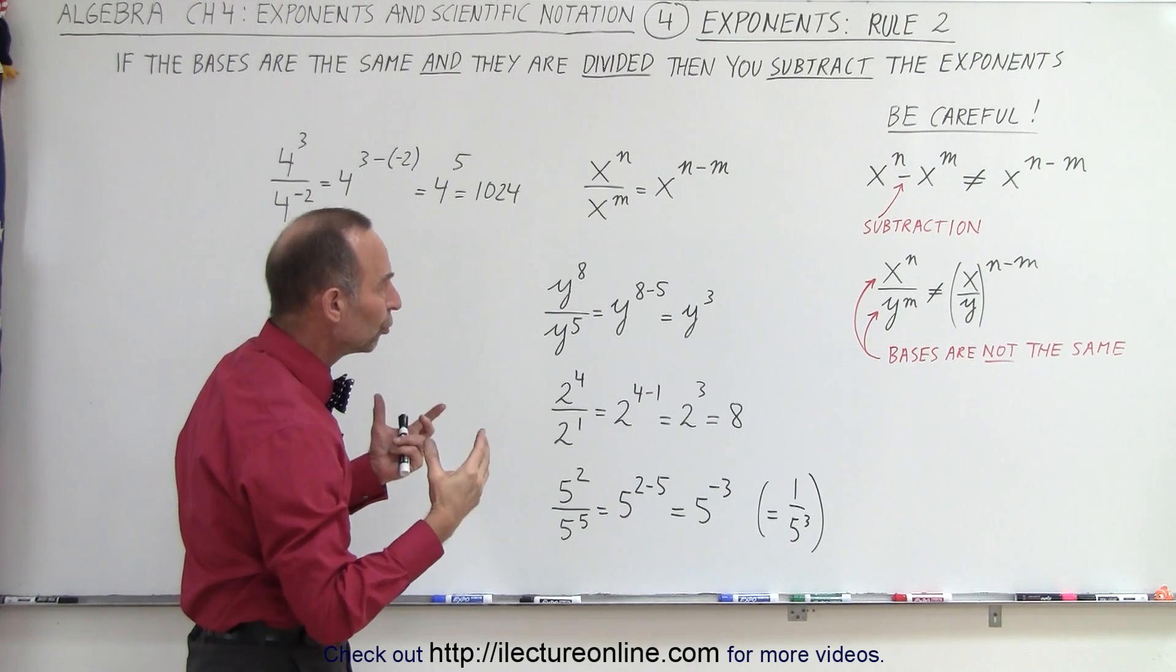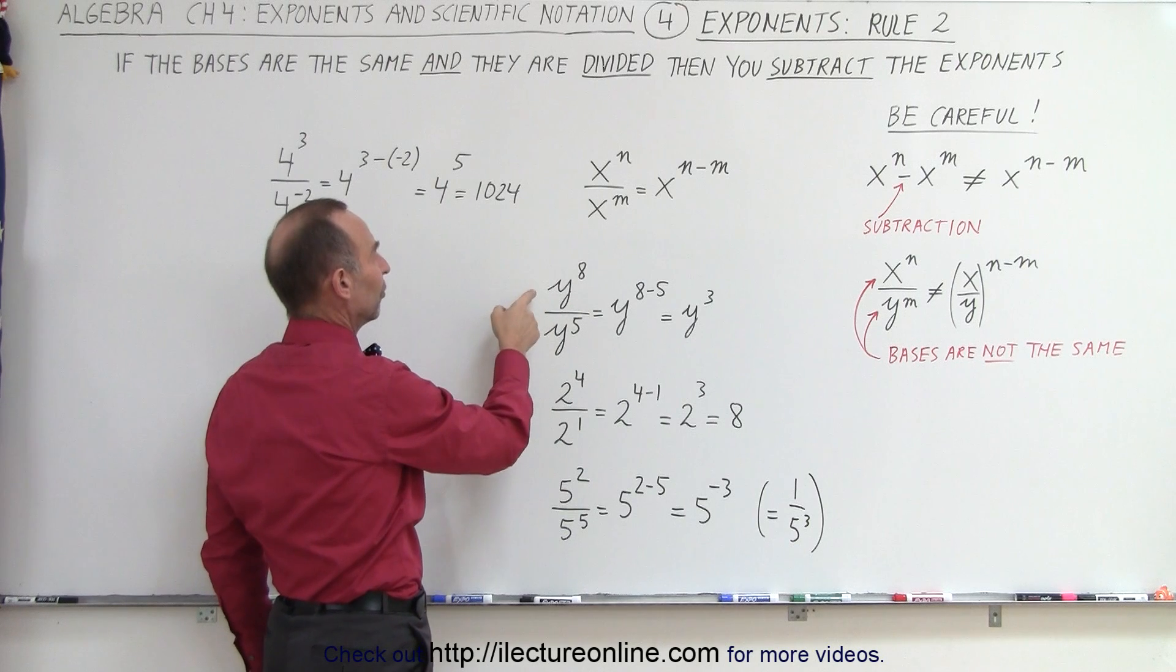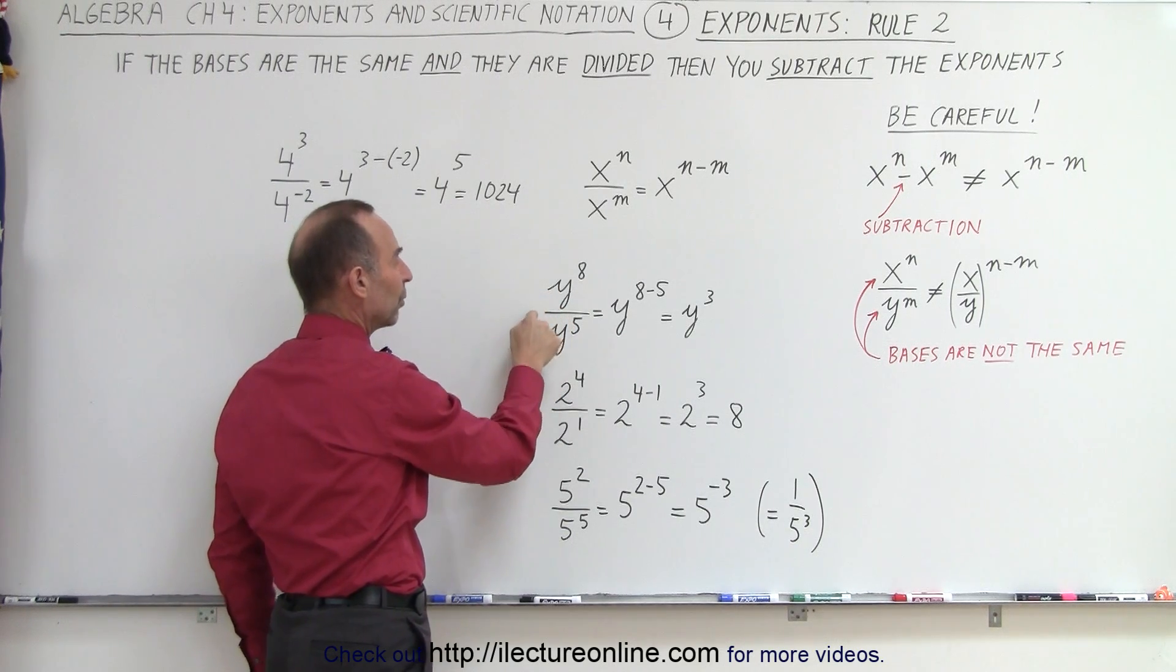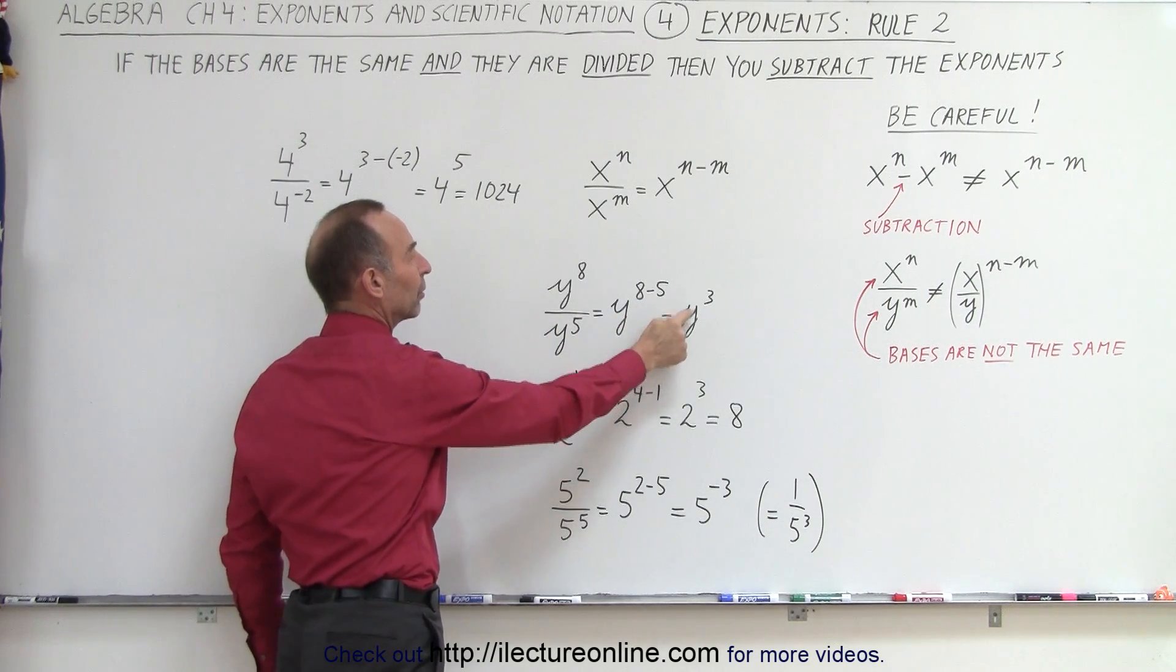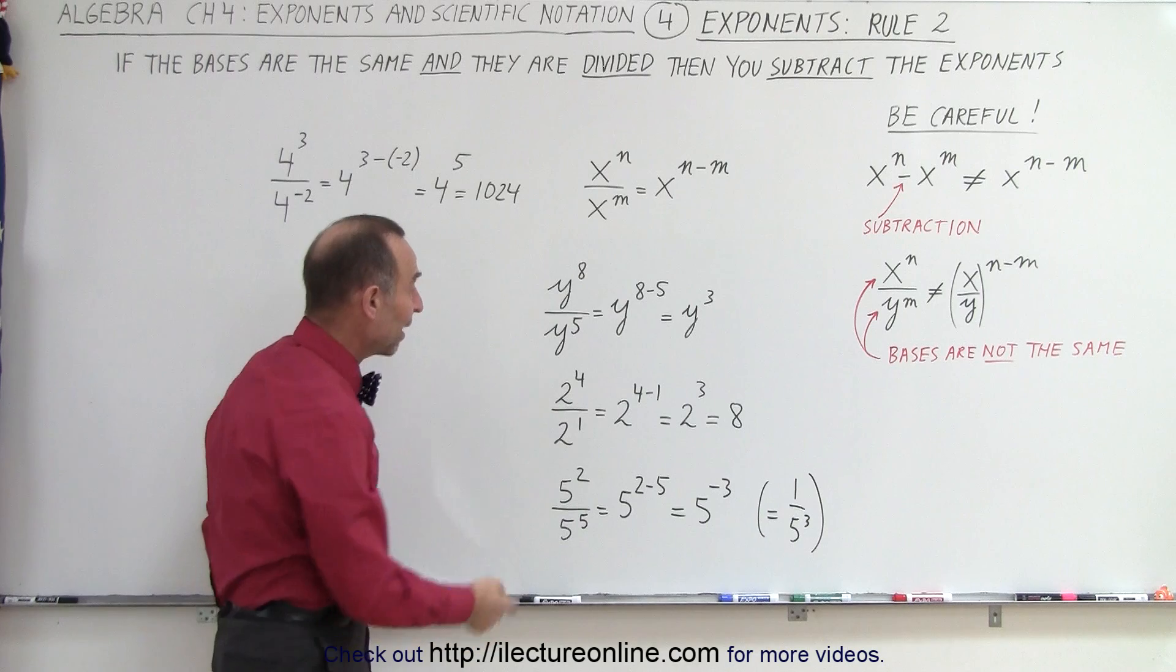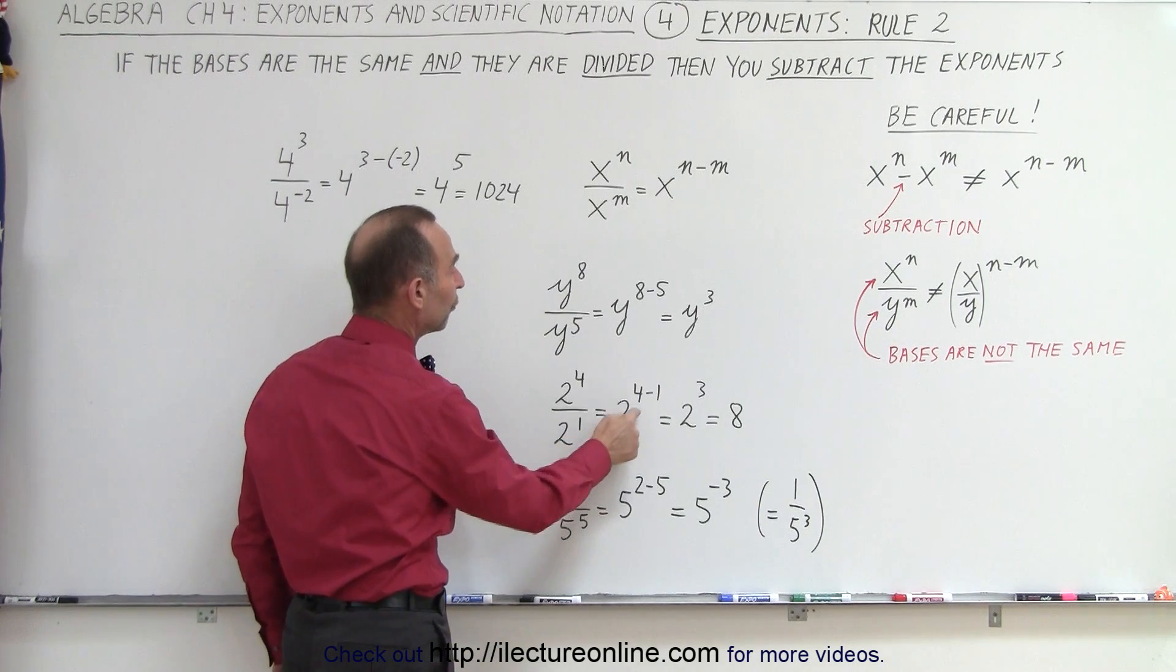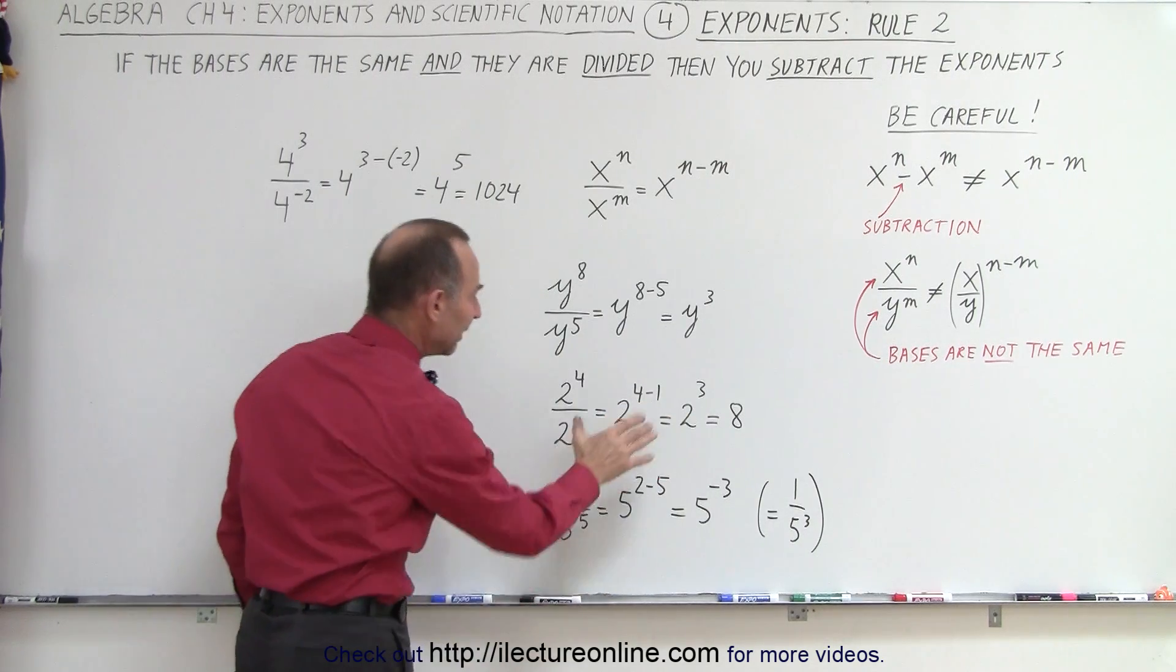If those two rules are adhered to, then we can do things such as this: y to the 8 divided by y to the fifth. The bases are the same, we're dividing, we simply subtract the exponents. 8 minus 5 is y to the third. Or we have 2 to the 4 divided by 2 to the first power, that is equal to 2 to the 4 minus 1, 2 to the third power or 8.